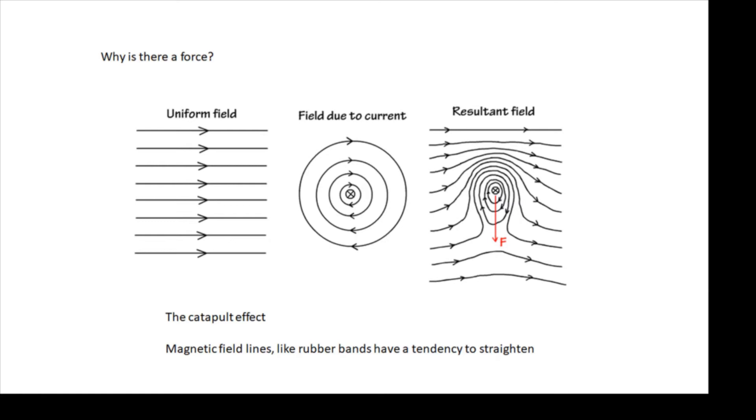And the result is that all of these flux lines above the wire, imagine they are like rubber bands and they are going to push the wire downwards. This has a name, it's called the catapult effect, you need to know it.